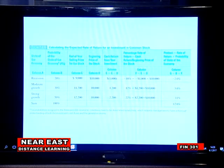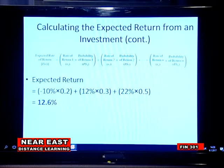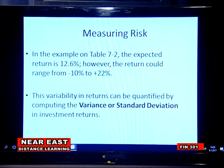For example, if we have three assets A, B, C, with probabilities of 20 percent, 30 percent, and 50 percent, and the rate of return for each asset is minus 10 percent, 12 percent, and 20 percent respectively. To calculate the expected rate of return, we multiply the probability for each asset by the rate of return for each asset, then sum all results. In this example, the expected return will equal 12.6 percent.